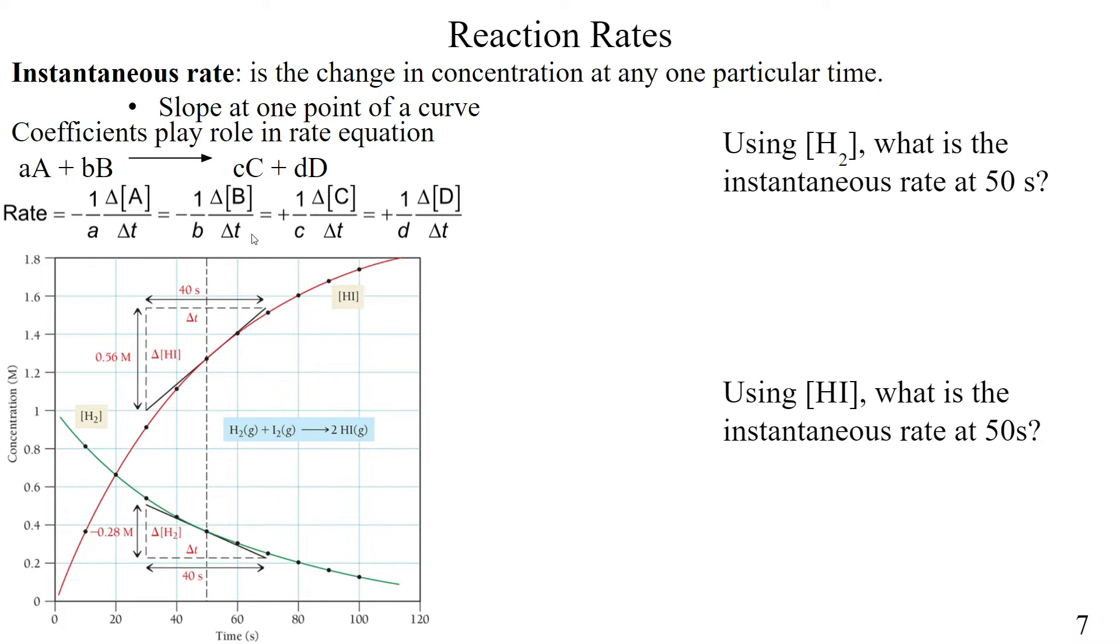Once again, we can see here that reactants have this negative and products have this positive. Products always have a positive rate. Reactants always have a negative rate because they're being consumed. But because we want to deal with positive numbers, this is the reason why we have this negative multiplied here.